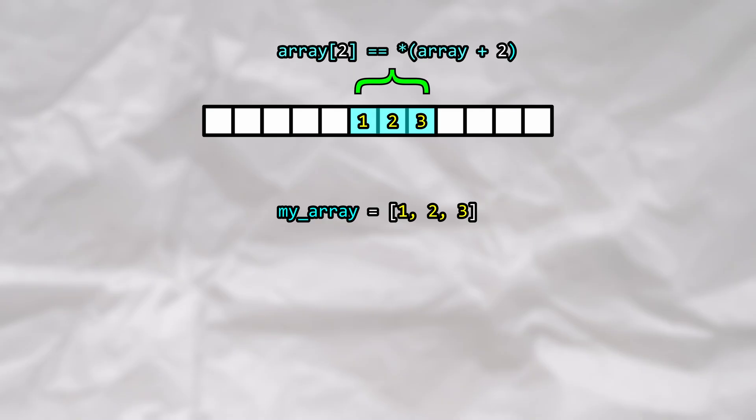Taking the memory location of the start of the array and adding the index to it in order to find the memory location that we want. We don't actually need to crawl through the array as we can simply jump to the memory location that we need.